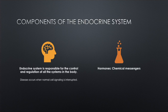The endocrine system is responsible for the control and regulation of all the systems in the body. A disease of the endocrine system occurs when your normal cell signaling is interrupted — very similar to diseases with the neurological system. Nerve signaling can be interrupted, causing a bad neurological disorder, and the same can happen with cell signaling, resulting in an endocrinological disorder.